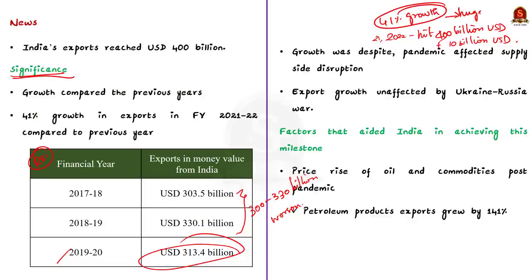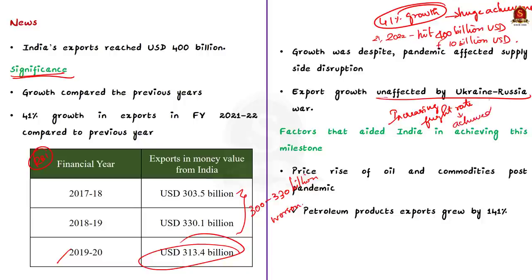This 41% growth is a huge achievement even during normal times, but the world has not recovered fully from the pandemic. Despite supply-side disruptions caused by the pandemic, India's exports grew. The Ukraine-Russia war resulted in a shortage of shipping containers and increasing freight rates, yet India not only achieved its 400 billion dollar target but is expected to reach 410 billion US dollars by financial year end.